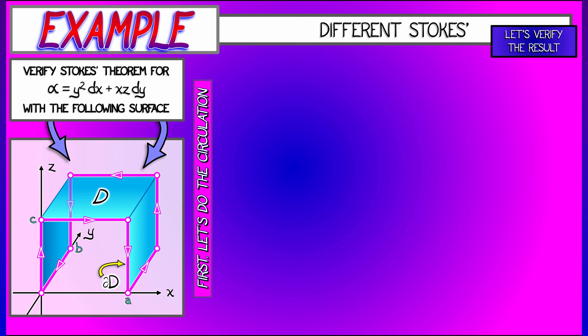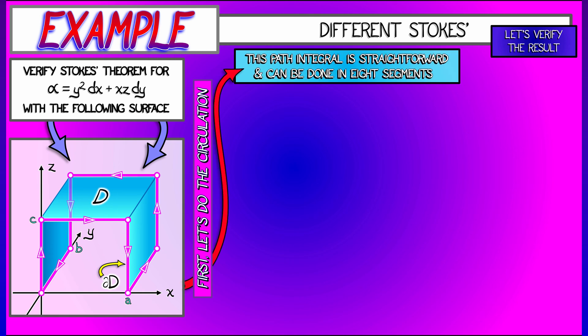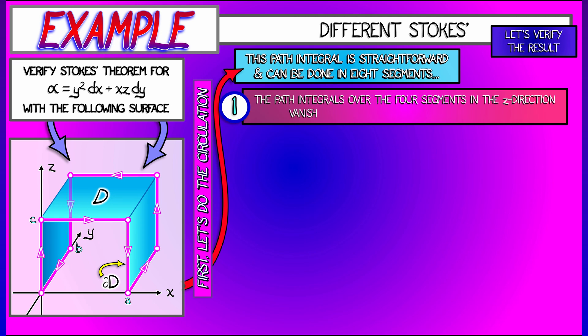So if we compute the circulation of alpha over that boundary, we're going to have to do eight line integrals. Oh, man. Well, this won't be so bad. Look...